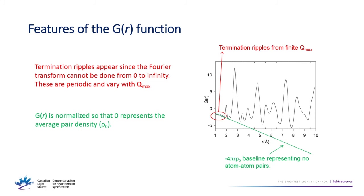There are a few features of a PDF that people first looking at it often find confusing. You'll see a first peak around two angstroms, and also little ripples at distances shorter than any real interatomic distance. These are termination ripples — they come from the fact that you can't collect data to infinite Q, so your PDF is convolved with the Fourier transform of a box function from your minimum to maximum Q. If you have good quality data they're small, periodic, and can be modeled.